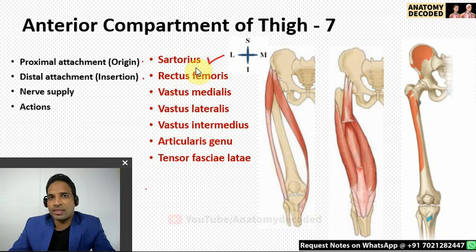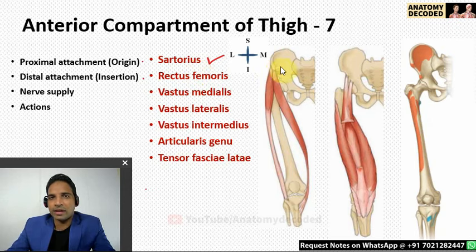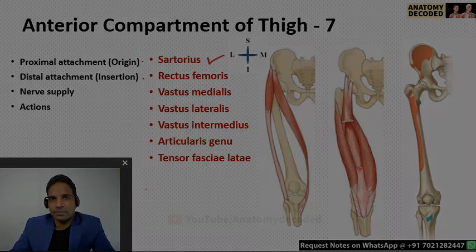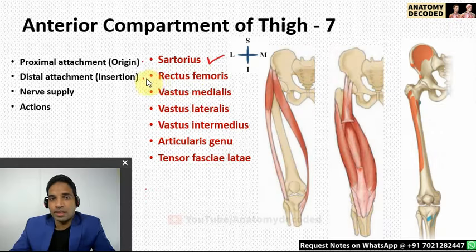The nerve supply of sartorius is by the femoral nerve — more specifically, the anterior division of the femoral nerve. The action of sartorius is flexion at the hip joint as well as flexion at the knee joint.